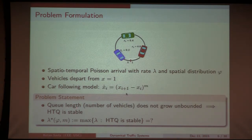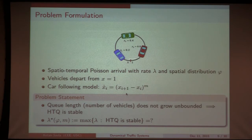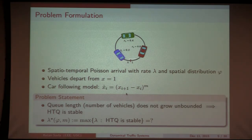This problem is complex. Whether the queue becomes unstable depends not only on the arrival rate, distribution phi, and m, but could also depend on the initial condition. In some cases initial condition doesn't matter, but in others it does. I'll highlight those aspects as we proceed.